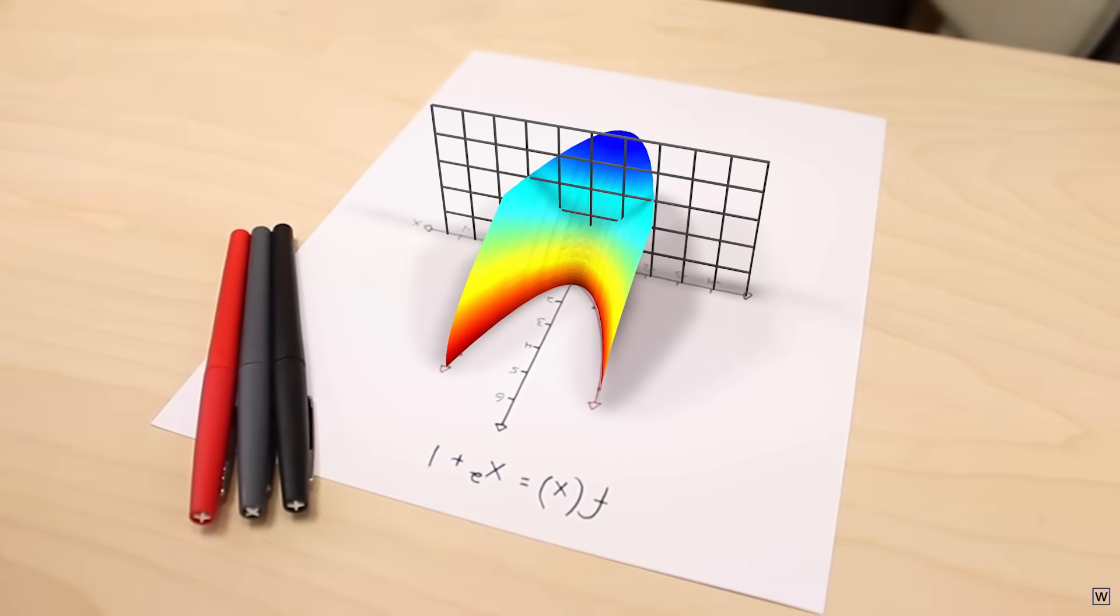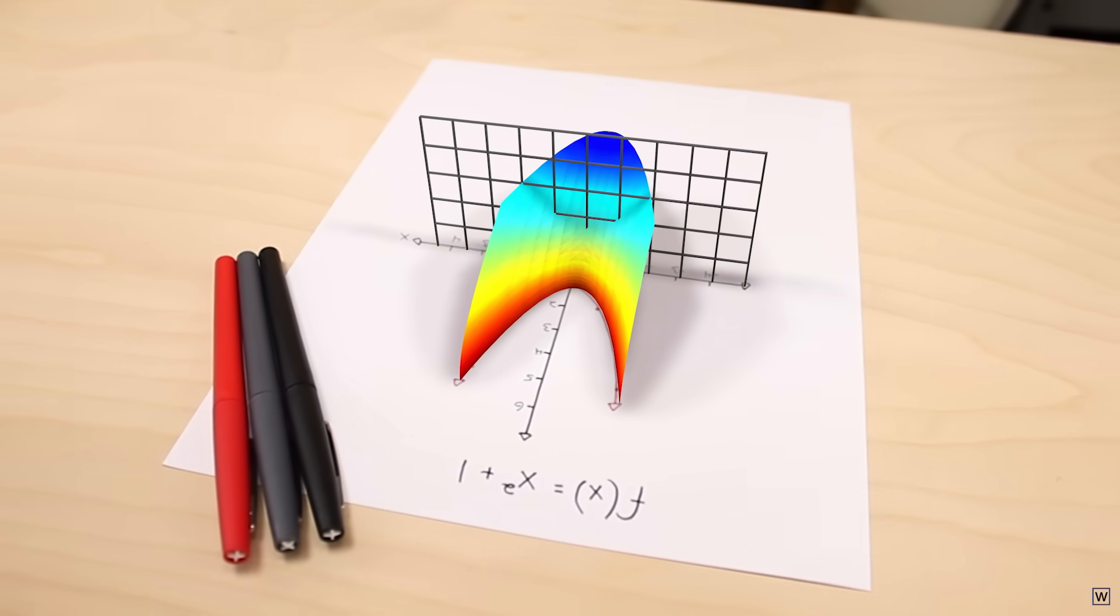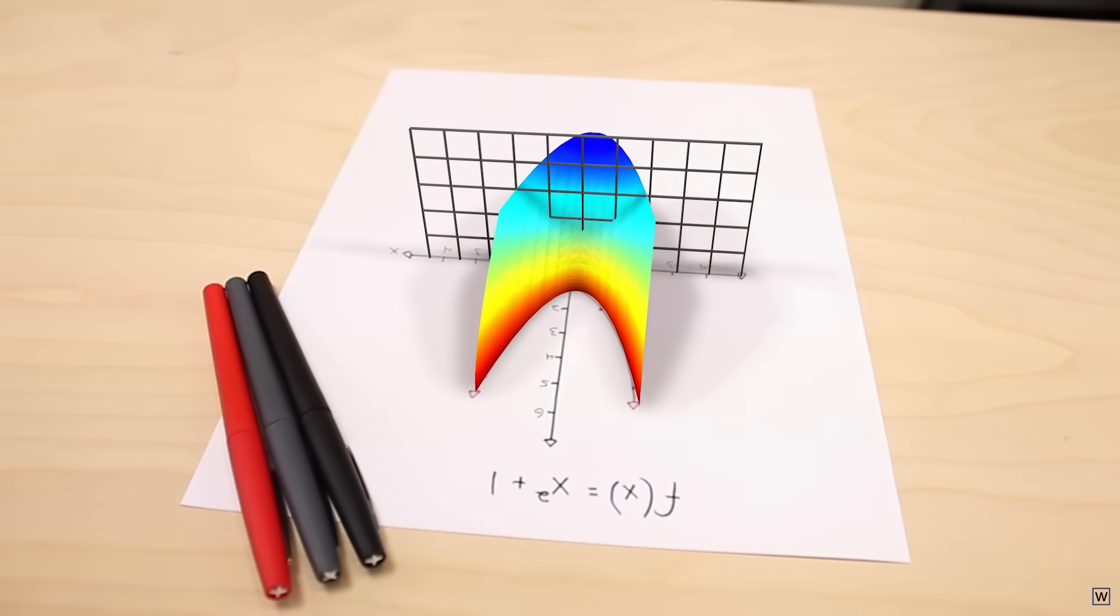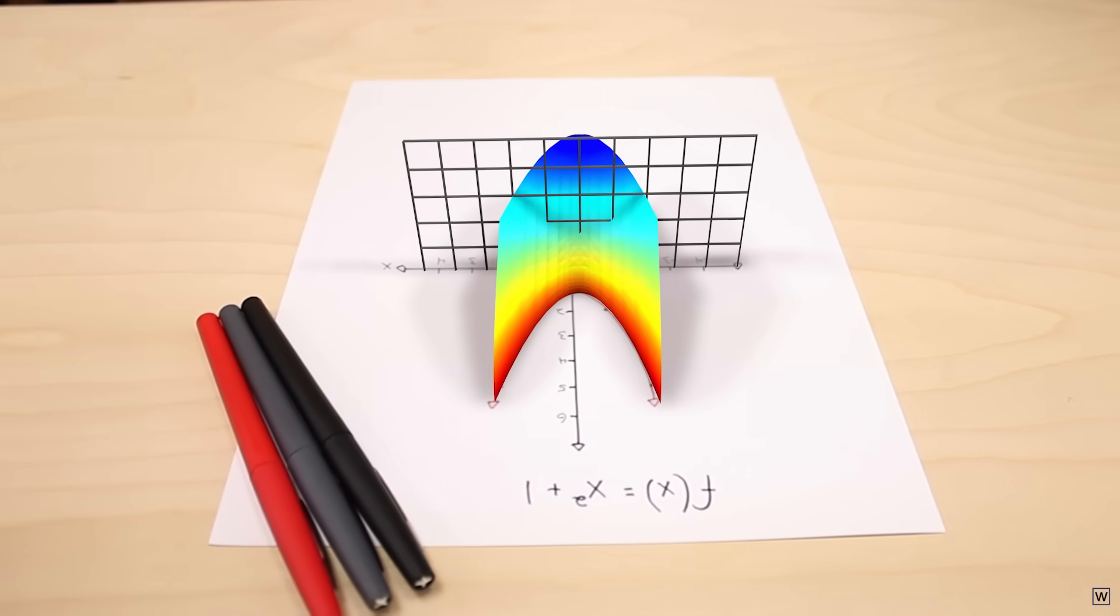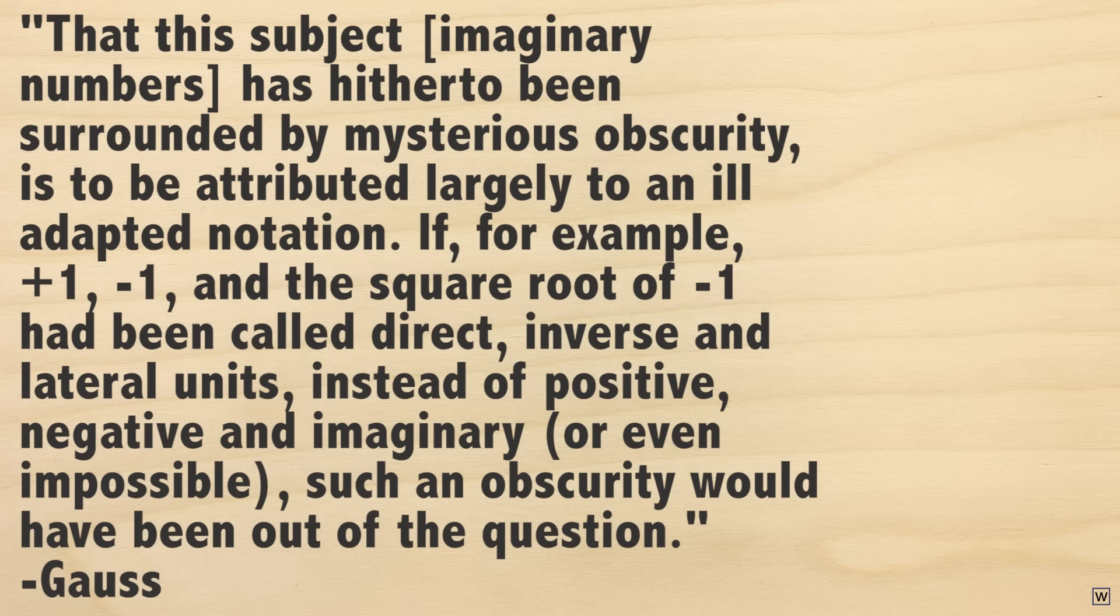Part of the reason is that it has been given a terrible, terrible name. A name that suggests that these numbers aren't even real. In fact, Gauss himself had something to say about this naming convention.